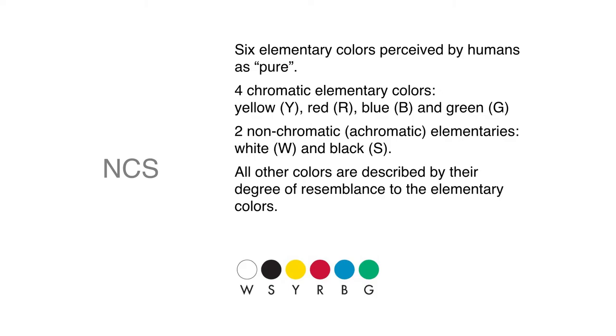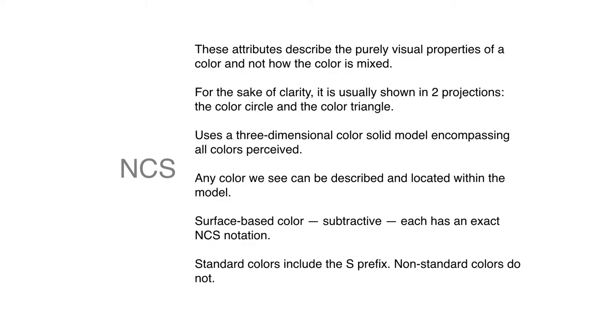Instead of primaries, the NCS identifies six elementary colors. And these are colors that are perceived by human beings as being pure. Within those elementary colors, there are the four chromatics, yellow, red, green, and blue, and two non-chromatic, or what it would call achromatic, which are white and black. Every other color is described by its degree of resemblance to these six elementary colors.